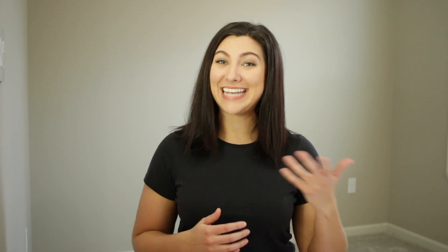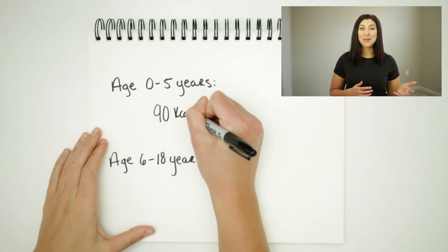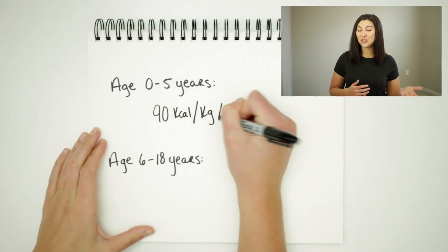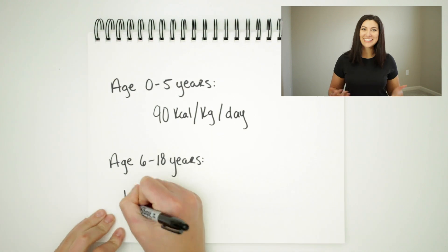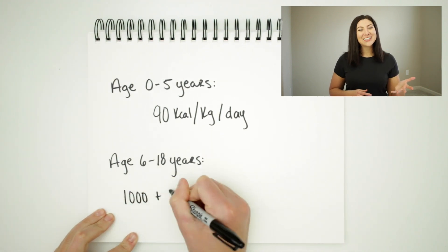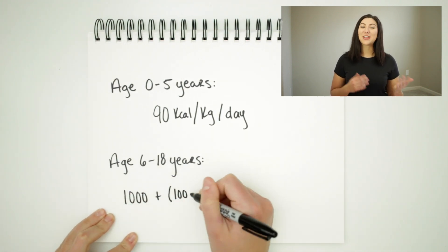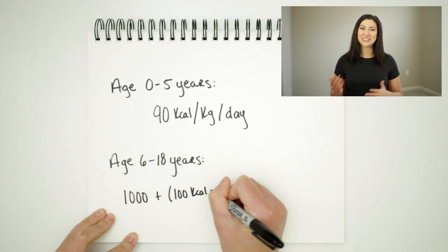Calculating your patient's daily caloric requirements is dependent on their age. For a patient zero to five years old, the formula is 90 kilocalories — remember that the layman's term for that is just calories — 90 kilocalories per kilogram per day.